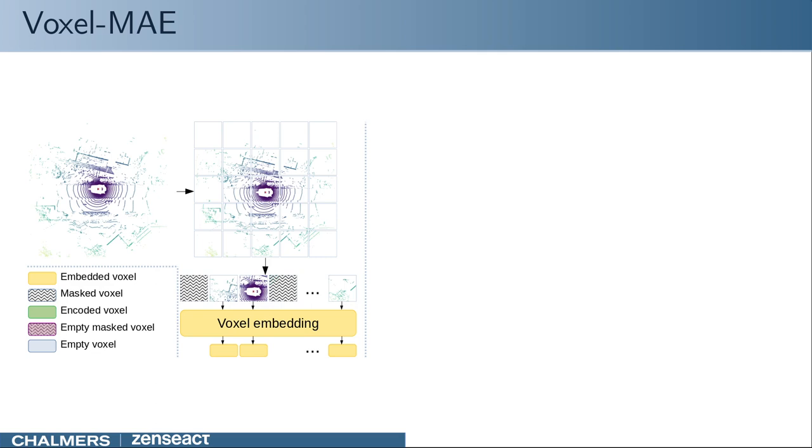Similar to patches and images, the point cloud is divided into equally sized and non-overlapping voxels. However, different from images, the majority of voxels are empty and do not contain any points. These voxels are discarded for computational efficiency.